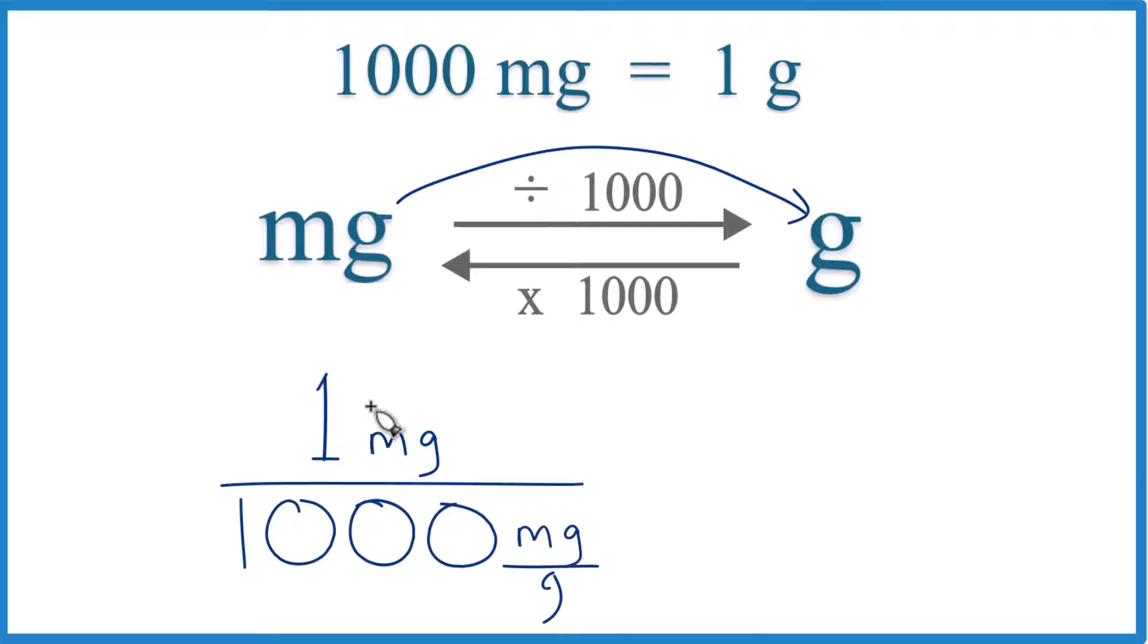So we're really just dividing 1 by 1,000 to get 1 milligram to grams. But if we look at the units, we have 1 milligram, and on the bottom we have 1,000 milligrams per gram. That's our conversion factor. So these are going to cancel out and leave us with grams. That's what we're looking for.